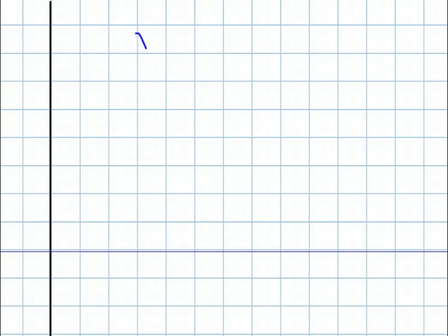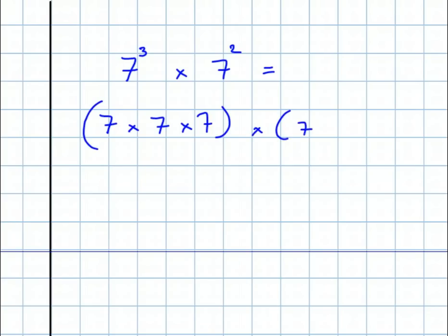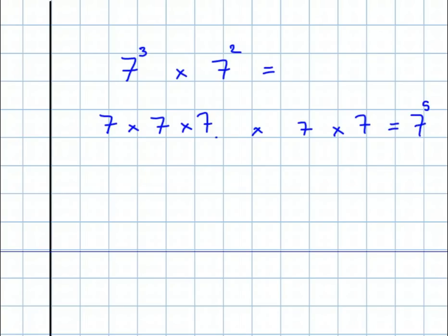Now, what about these laws of indices? Look at this: 7 cubed times 7 to the power 2. That's shorthand for 7 times 7 times 7, all times 7 times 7. If we get rid of the brackets, we'll see that we've got 7 appearing 5 times. So in index form, it's 7 to the power 5. And here's the rule: when you multiply, you add.